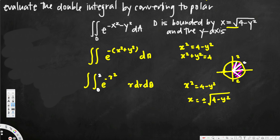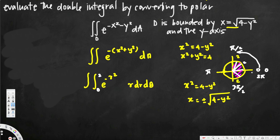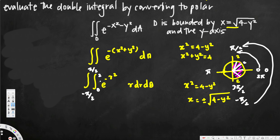Now let's look at the outside limit for dθ. We always count the angle, and in this situation we have to go from the bottom to the top of the half-circle. We know that in a circle, 0 is to the right, π/2 is at the top, π is to the left, and 3π/2 is at the bottom. To avoid splitting into two separate limits, we can go clockwise and counterclockwise, giving us negative π/2 to positive π/2 as our θ limits.